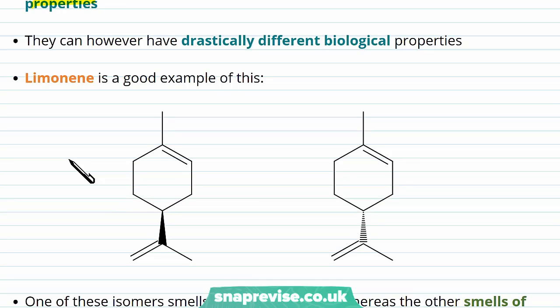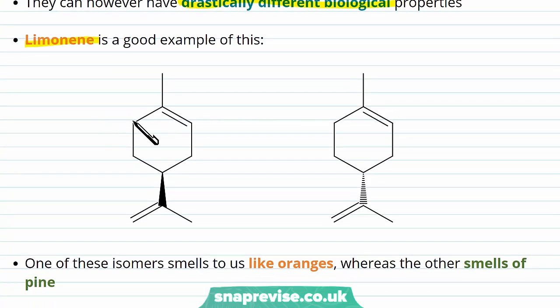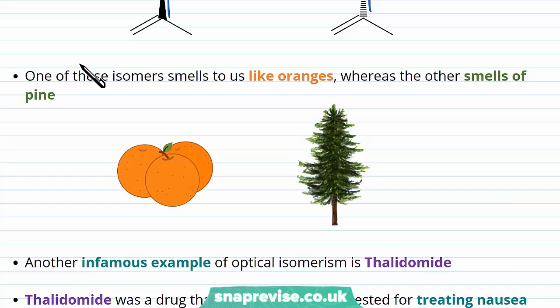Both of them have exactly the same chemical properties, and they tend to have similar physical properties, although we'll look at a difference in physical properties in a little while. The main thing about optical isomers that's interesting is that they have drastically different biological properties. So limonene is a good example of this. We have two different optical isomers of the limonene, where you can see here that one of the isomers has this carbon bond coming out towards us, whereas the other has it going into the page.